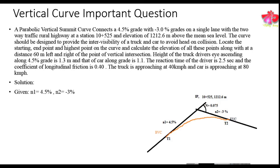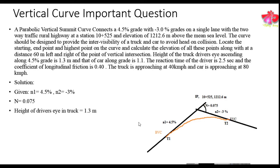The ascending grade N1 equals +4.5% and the descending grade N2 equals -3%. The deviation angle N comes out to be 0.075, because N1 minus N2 equals 4.5 minus (-3) = 7.5%. The height of the driver's eye in the truck is 1.3 m and in the car is 1.1 m.